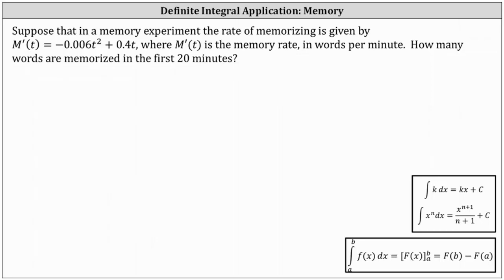Suppose in a memory experiment, the rate of memorizing is given by M'(t) = -0.006t² + 0.4t, where M'(t) is the memory rate in words per minute. How many words are memorized in the first 20 minutes?